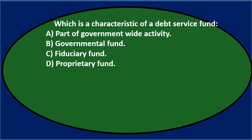The debt service fund — is it part of the government-wide activities, or is it in these groupings? These are basically the groupings of funds that we have: the governmental fund, the fiduciary funds, or the proprietary fund. The debt service fund, where does it lie? It's a fund. You really want to think about these two things separately, almost as two sides of the ledger. We have the government-wide activities, reporting activity as a whole for the entity, and then we have the funds. If we're talking about a debt service fund, it's not part of the government-wide activities — so it's not going to be A.